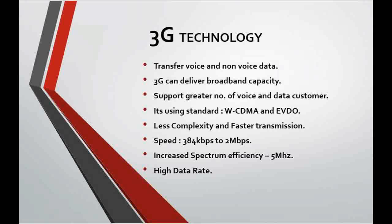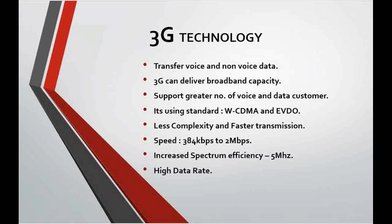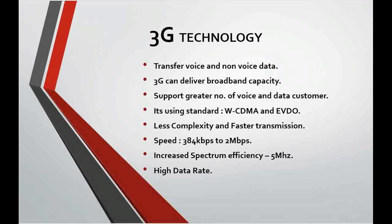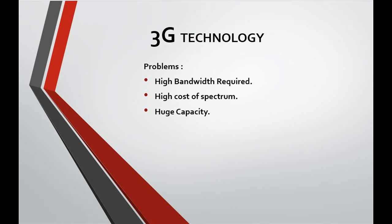3G has less complexity and faster transmission. It has large capacity and broadband capabilities, and allows transmission of 384 kbps per mobile system and up to 2 Mbps. It increased spectrum efficiency up to 5 MHz. A greater number of users can be simultaneously supported per radio frequency bandwidth at low incremental cost than 2G, with global roaming. However, there were challenges including high bandwidth requirements, high spectrum licensing fees, and huge capital investment.